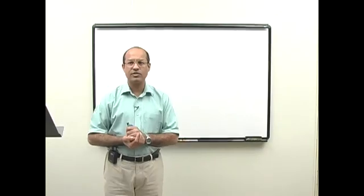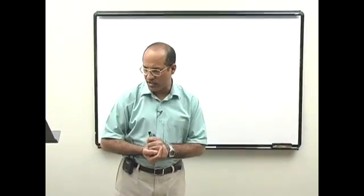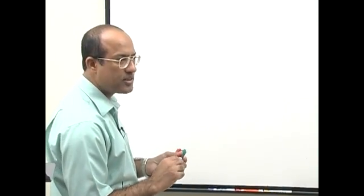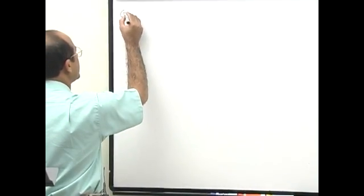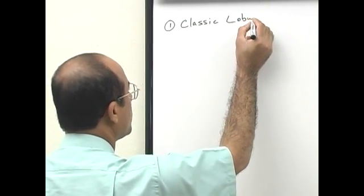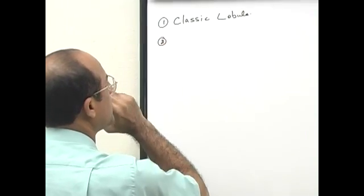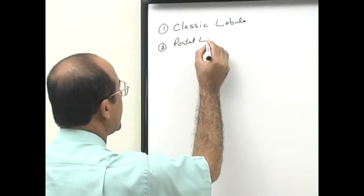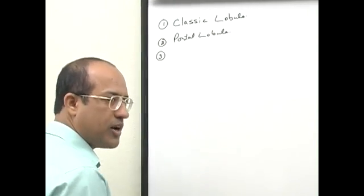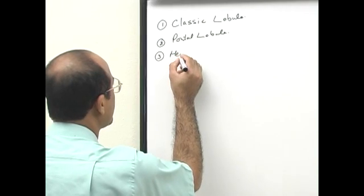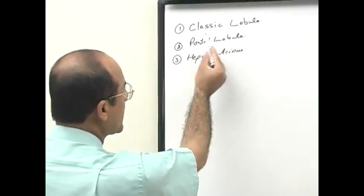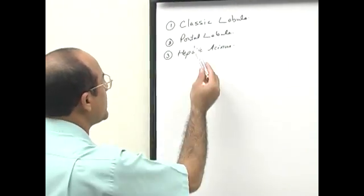Now we will go into the details of the liver lobular structure. The liver parenchyma and its arrangement of the hepatocytes can be explained in three ways: in reference to the classic lobule, which I mentioned previously; in reference to the portal lobule; and another way is the hepatic acinus. I will first draw the classic lobule, three or four of them, then I will explain the other two types as well.